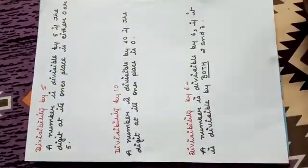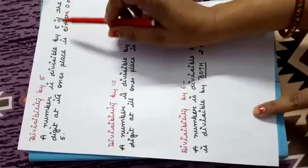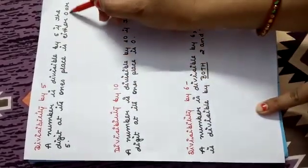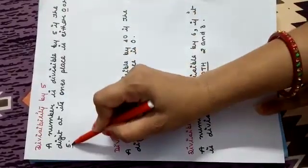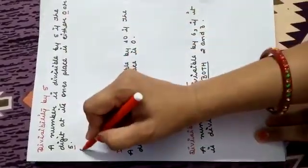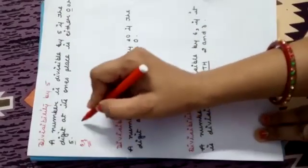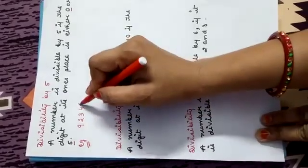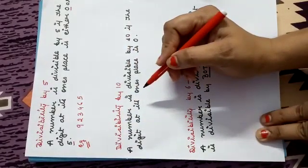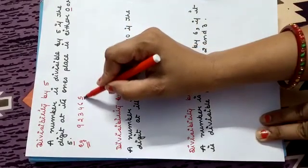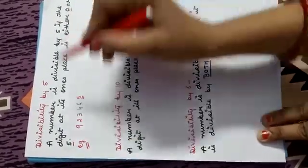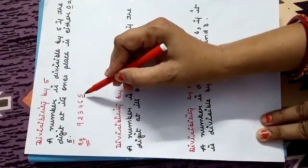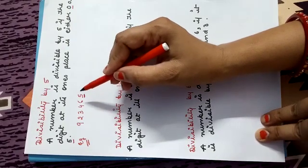Divisibility by 5: A number is divisible by 5 if the digit at its 1's place is either 0 or 5. The 1's place digit should be 0 or 5. If either of these two numbers is at the unit place, that means the number is divisible by 5.